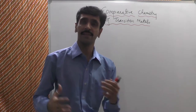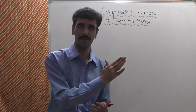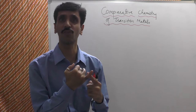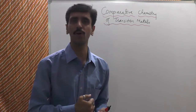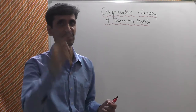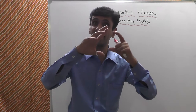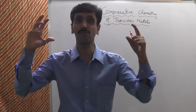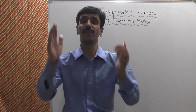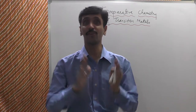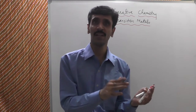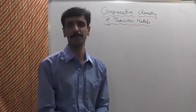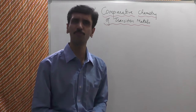The basis of differentiation between transition elements and D-block elements is electronic configuration. I will explain the electronic configuration of the first series of transition elements in the periodic table. There are three transition series, each comprising 10 elements, so 30 elements in total. We are going to consider only the first series, and then I will come to the fine line of difference between D-block elements and transition elements.